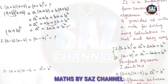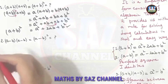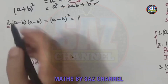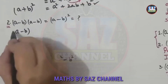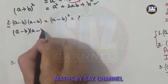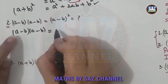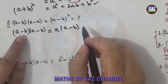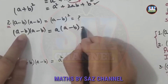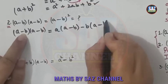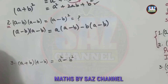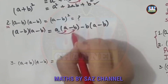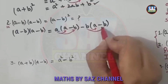Coming to the second identity, (a - b)² — recall that when multiplying (a - b) by (a - b). Again, I take a and multiply it with the whole of the second bracket, then take minus b and apply the distributive property to multiply it with the whole of the second bracket.